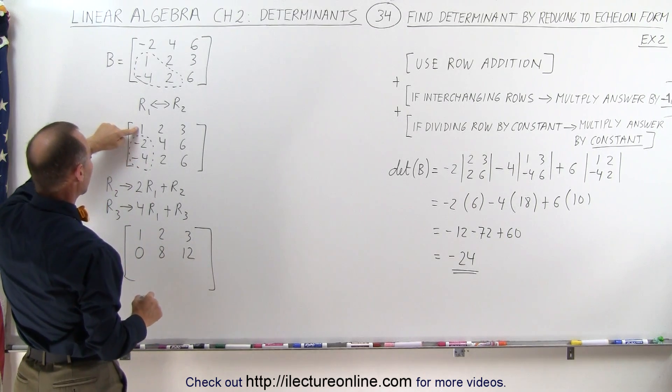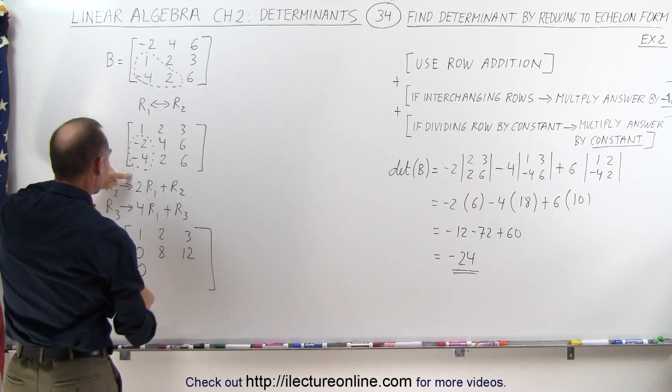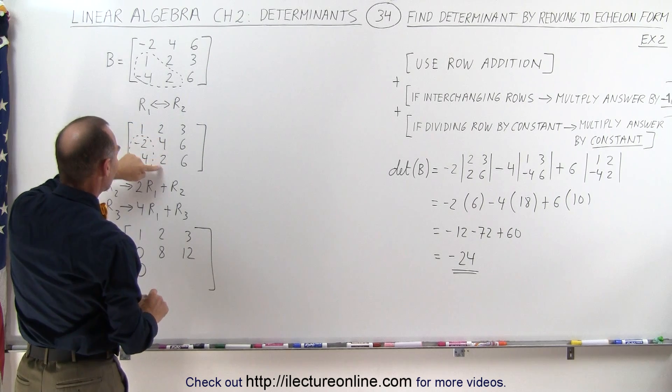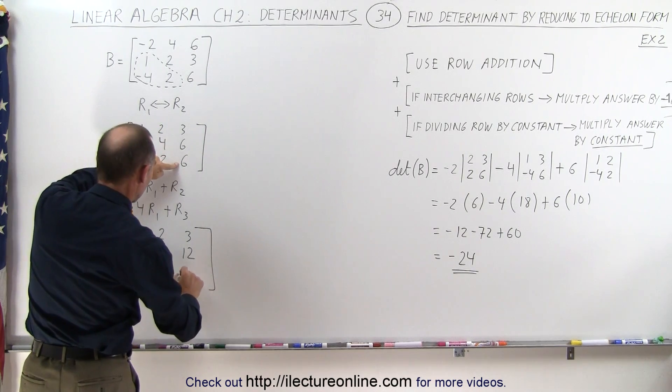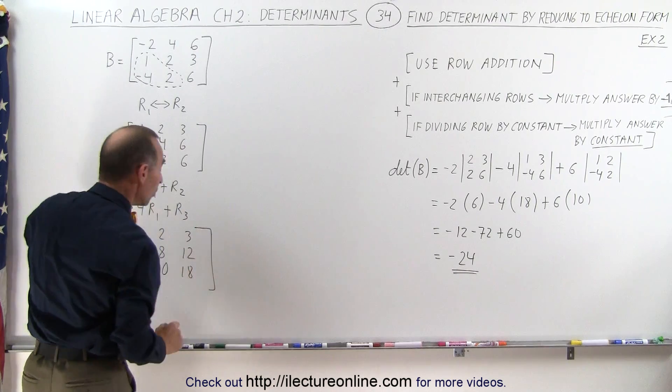For the third row, 4 times 1, added to negative 4, is 0. 4 times 2, 8, plus 2 is 10. And 4 times 3, 12 plus 6, is 18. So we're almost there, we only have one more element to go, we want to get rid of this element right here.